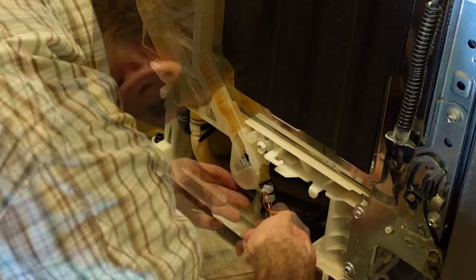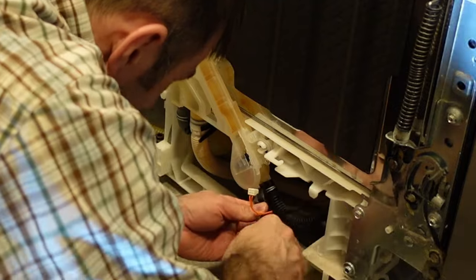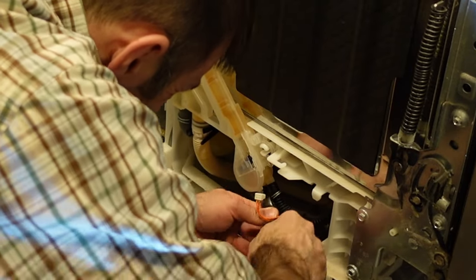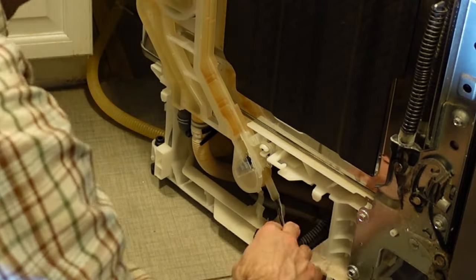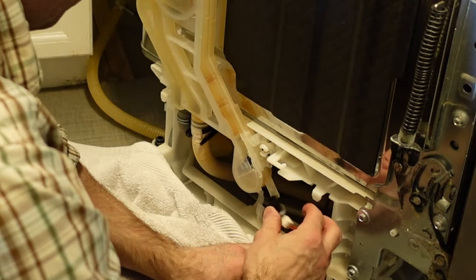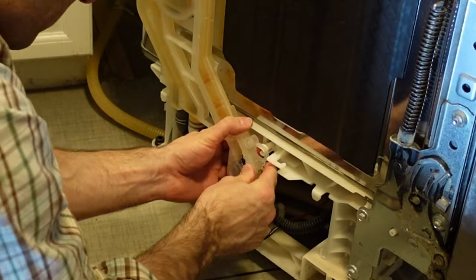You do need channel locks or some sort of pliers. There's a few clips that need to be compressed and then pulled back, and then all the hosing comes off. Good thing to have a towel. I probably should have had it underneath the dishwasher when I removed that hose, but I didn't, that's okay. Just clean water anyway, because that's the clean water side.